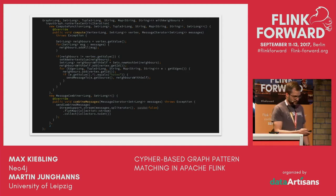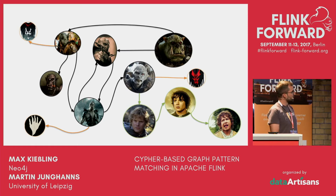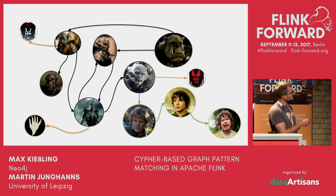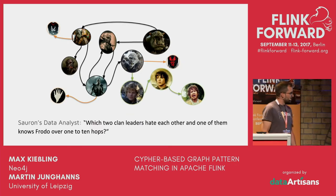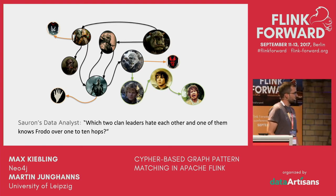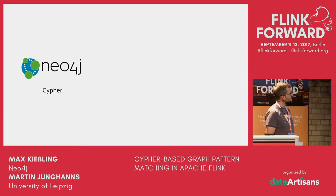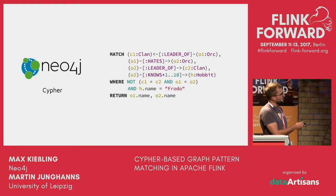It gets even worse because those networks are typically not homogeneous — it's not only about orcs and hate-ship relationships. It's more about heterogeneous networks: we have different kinds of vertices like clans, hobbits, and not only hate relationships but also leader-of relationships for clans or friendship relationships between hobbits. The analyst might then ask: which two clan leaders hate each other, and one of them knows Frodo over one to ten hops?